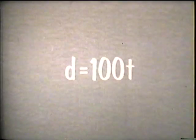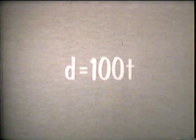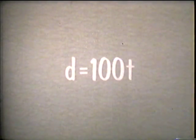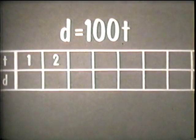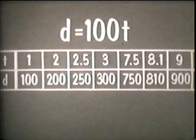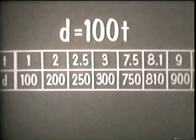For example, look at this formula, which is a very simple equation: D equals 100T. This equation expresses a mathematical relationship between the two variables of distance and time for any object, such as a plane moving at a uniform rate of 100 miles per hour. For each value of time, we can find a corresponding value of distance, giving us many pairs of values.